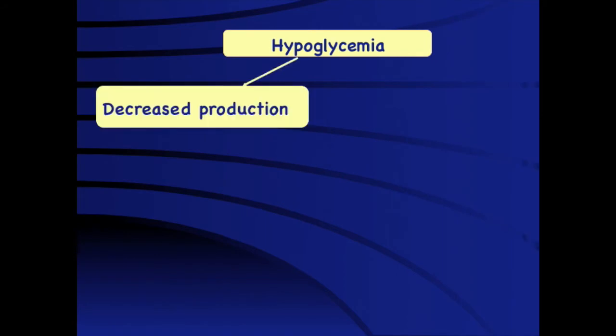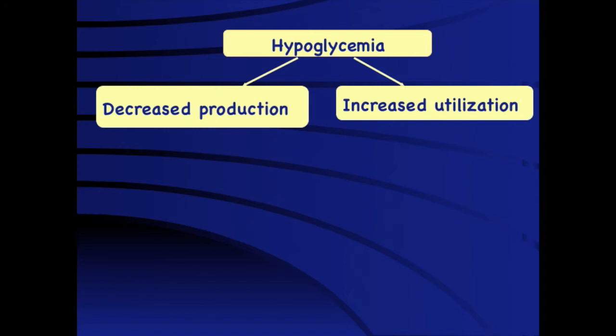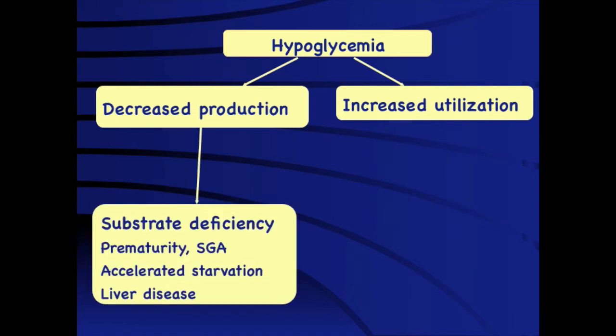Hypoglycemia can theoretically be due to either decreased production of glucose or increased utilization. The easiest way to distinguish between the two: if giving a physiological maintenance glucose infusion rate of 6–8 mg/kg/min controls blood sugars, we are dealing with decreased production. But if the requirement is much higher — beyond 12 mg/kg/min — we are dealing with increased utilization. This distinguishing feature is very important because the causes, evaluation, and management of both groups are entirely different. Decreased production relates to problems with substrates — as in prematurity, SGA babies, ketotic hypoglycemia of infancy.